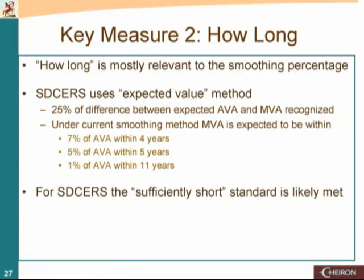The other measure — how long — is relevant to the smoothing percentage. SDSURGE uses the expected value method. Each year, 25% of the difference between what we expect the actuarial value to be and the market value is recognized. Under that method, within four years the market value would be within 7% of the actuarial value. Within five years it's 5%, and within eleven years it's 1%. So our preliminary conclusion is that SDSURGE's 'sufficiently short' standard is likely met.